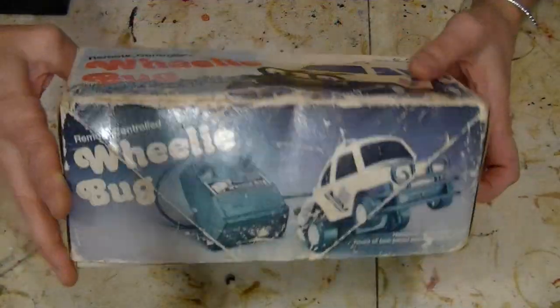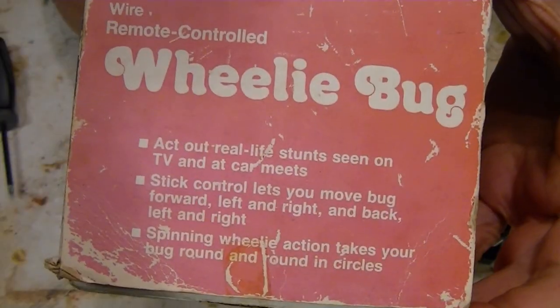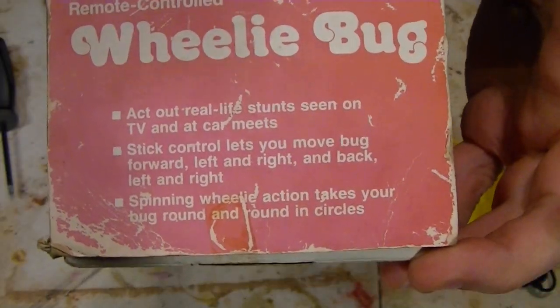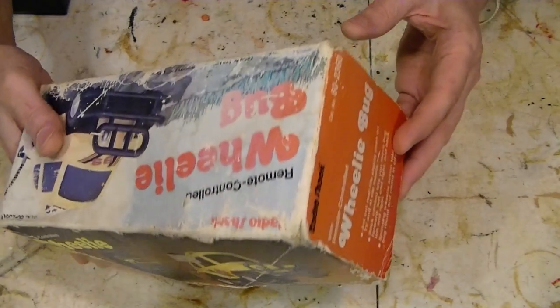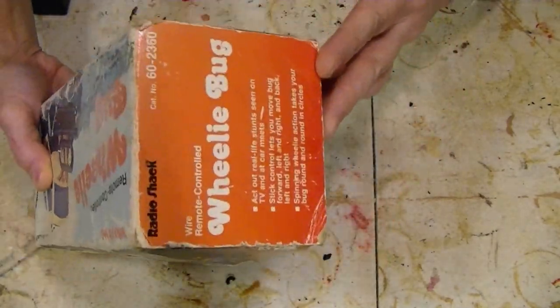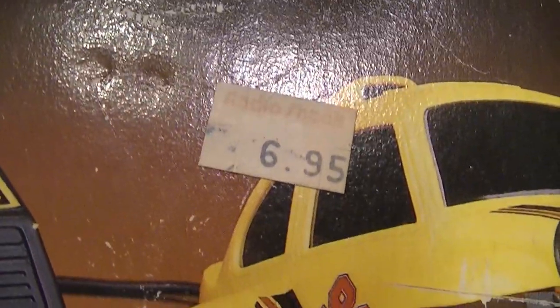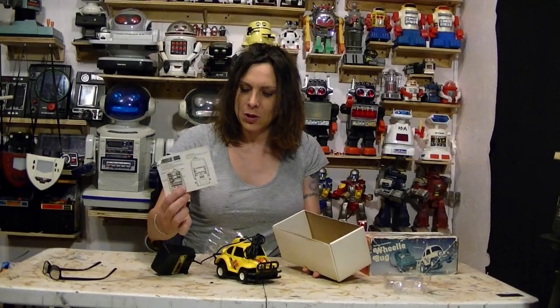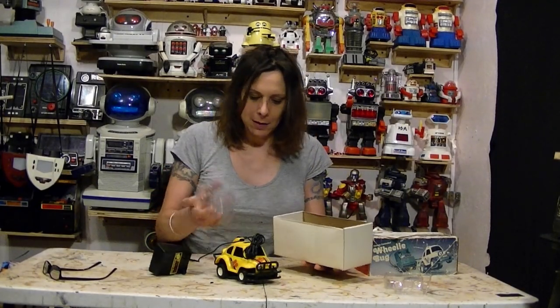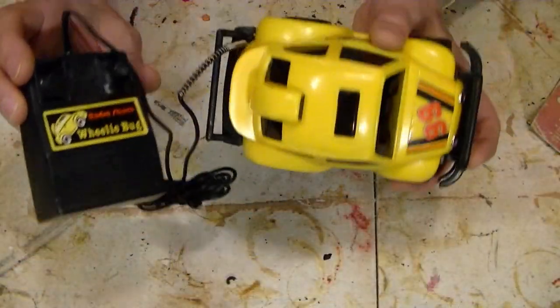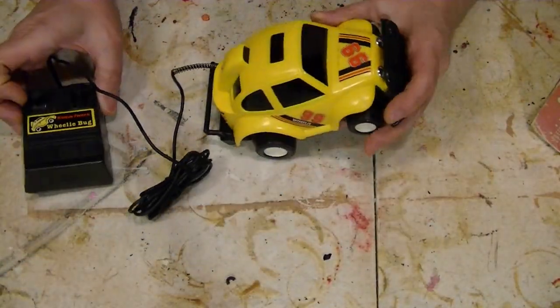Hello, Randy Rain here, and I have another Radio Shack little toy. This is the Wheelie Bug. It comes in its original box, original instructions, which is all of one thing here, little pieces, and the Wheelie Bug right here.